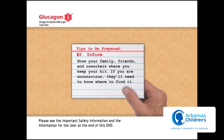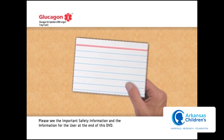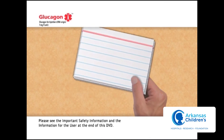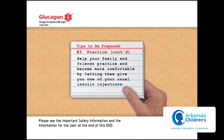Tip number two: Inform. Show your family, friends, and coworkers where you keep your kit — if you're unconscious, they'll need to know where to find it. Tip number three: Practice. A person who has never given an injection probably will not be able to do so in an emergency. Help your family and friends practice and become more comfortable by letting them give you one of your usual insulin injections.